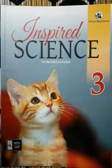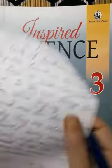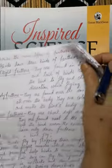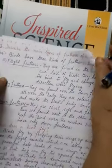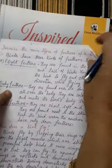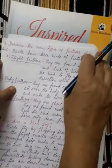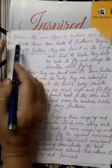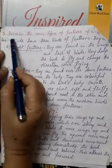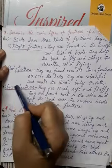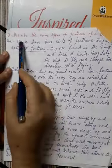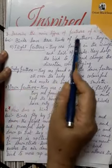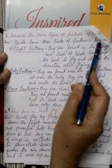Now we go on to question number 3 which says: describe the main types of feathers of a bird. Birds have three kinds of feathers, they are as follows.